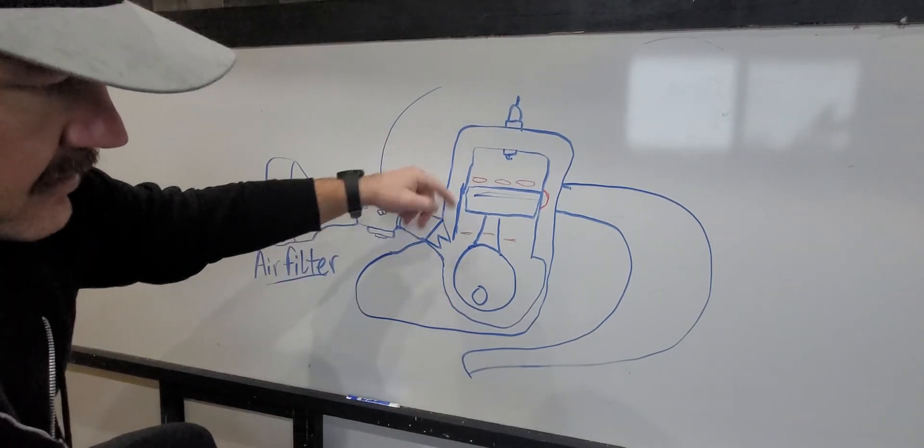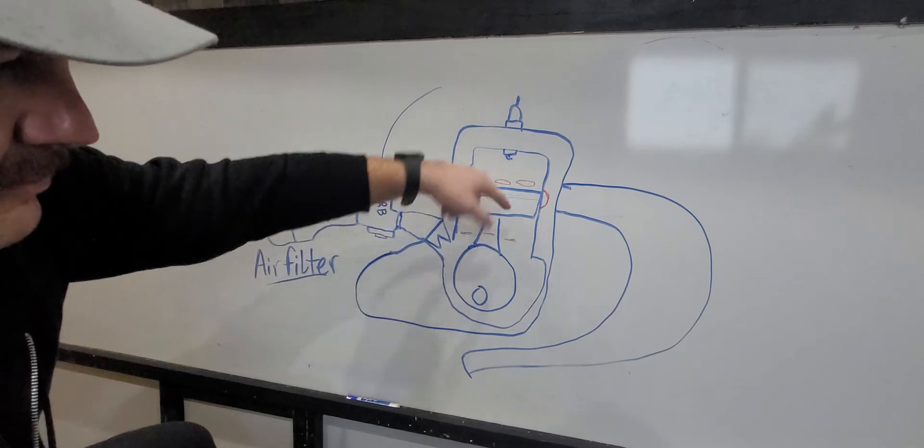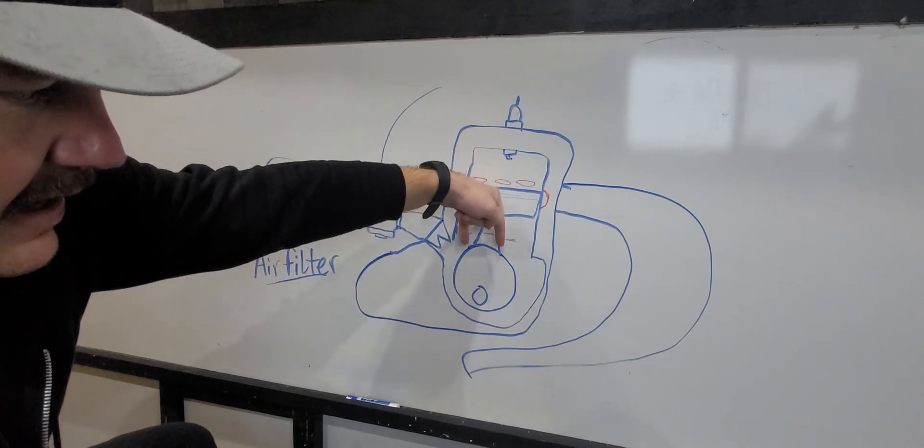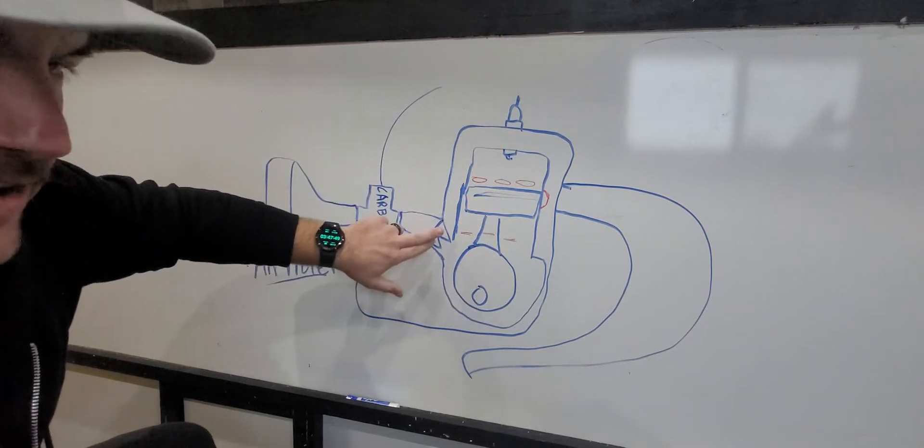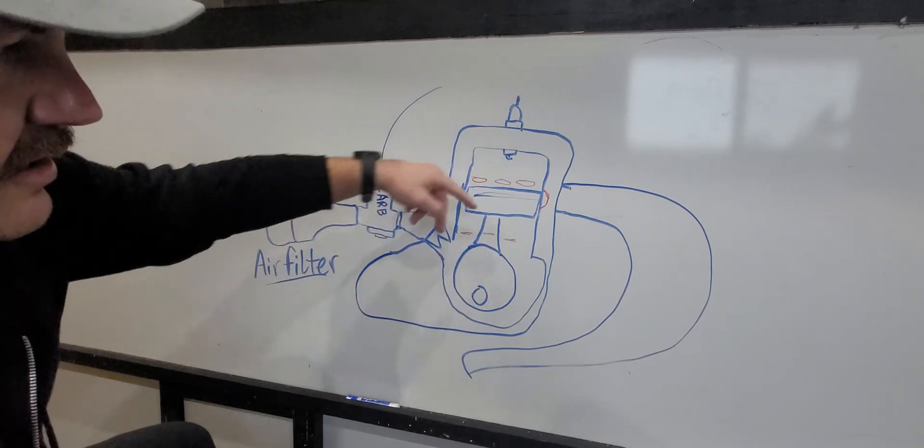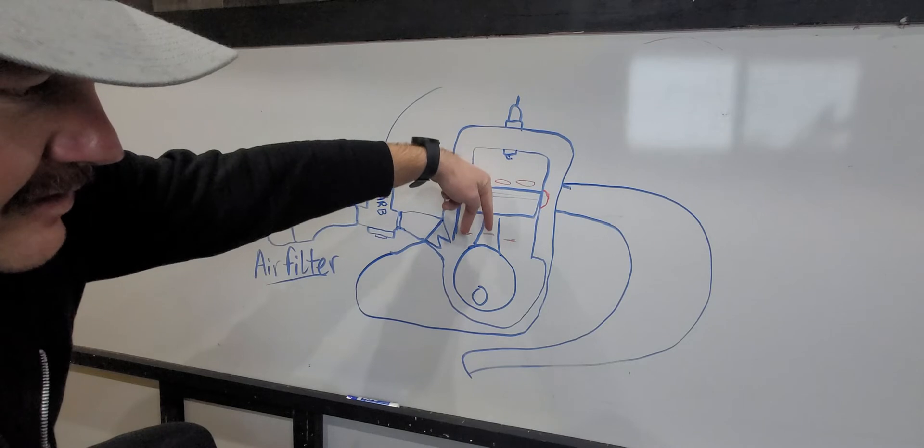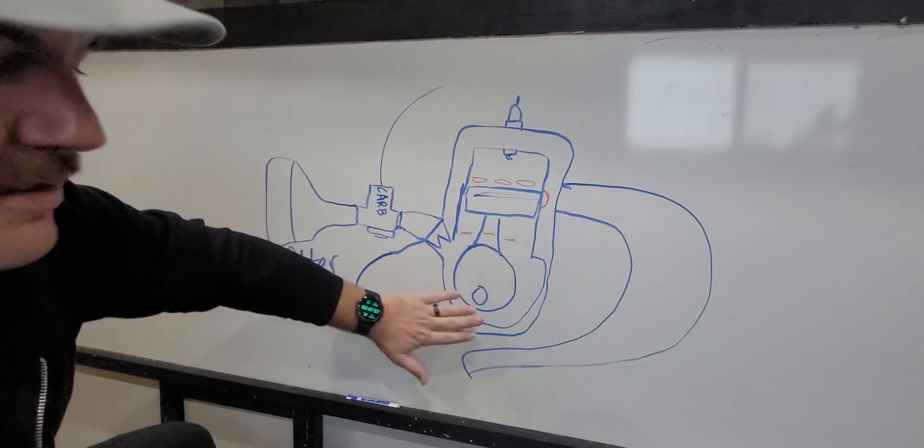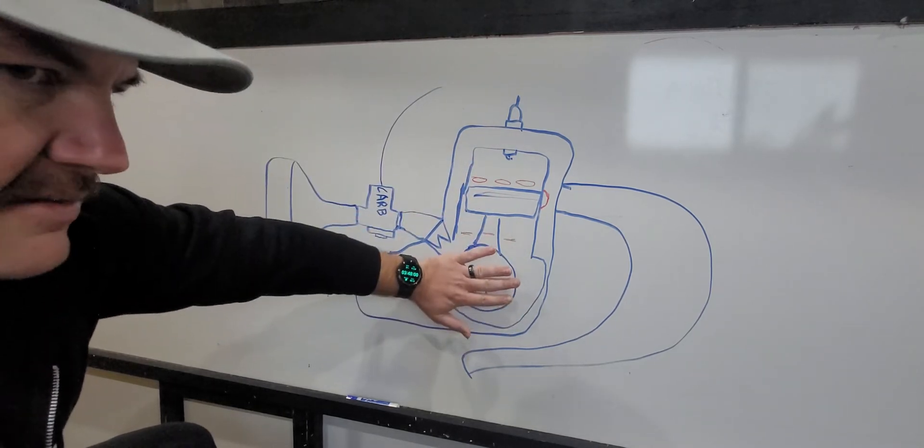So anyway, to keep it from blowing all that out, when the piston's going down now, this shuts so it doesn't blow all that fuel and everything back through here. And at the same time it's doing that, now it's created compression in the crankcase.